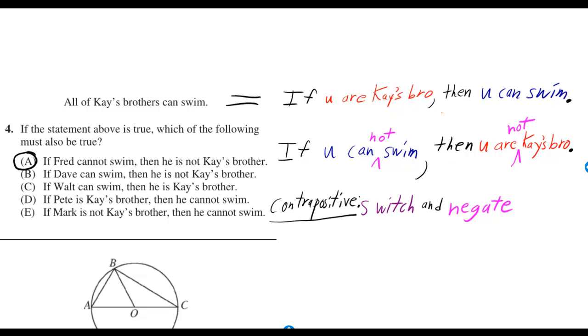And if you think about that, that should make sense. If you are K's bro, then you can swim. If you cannot swim, then you are not K's bro.